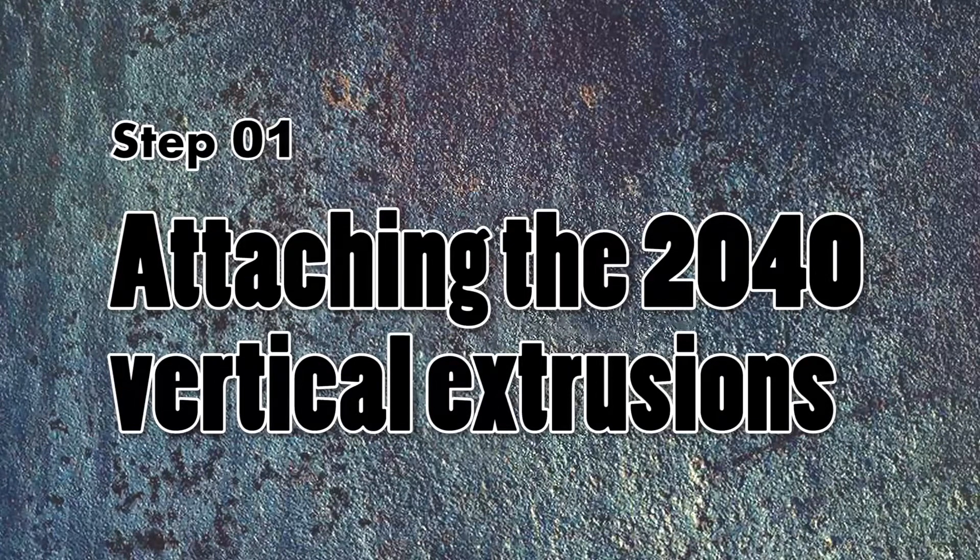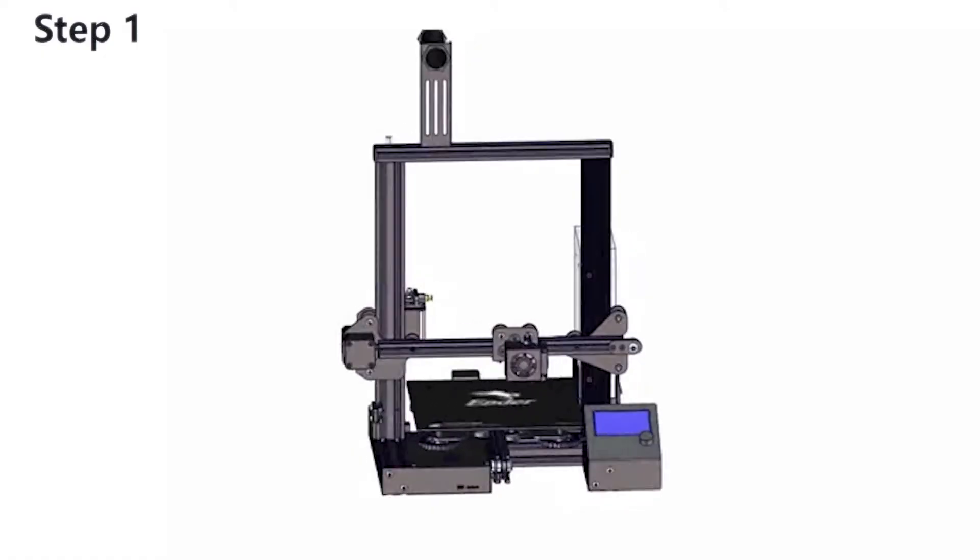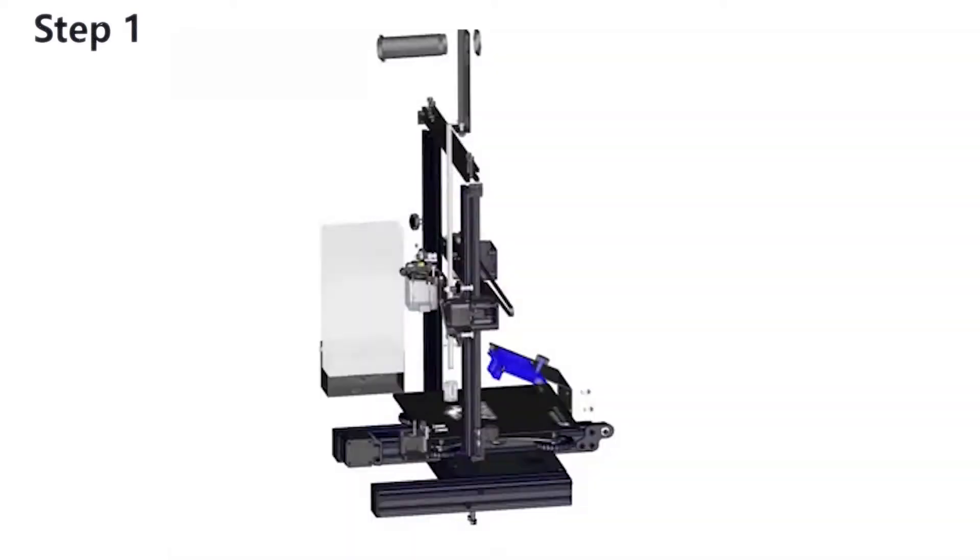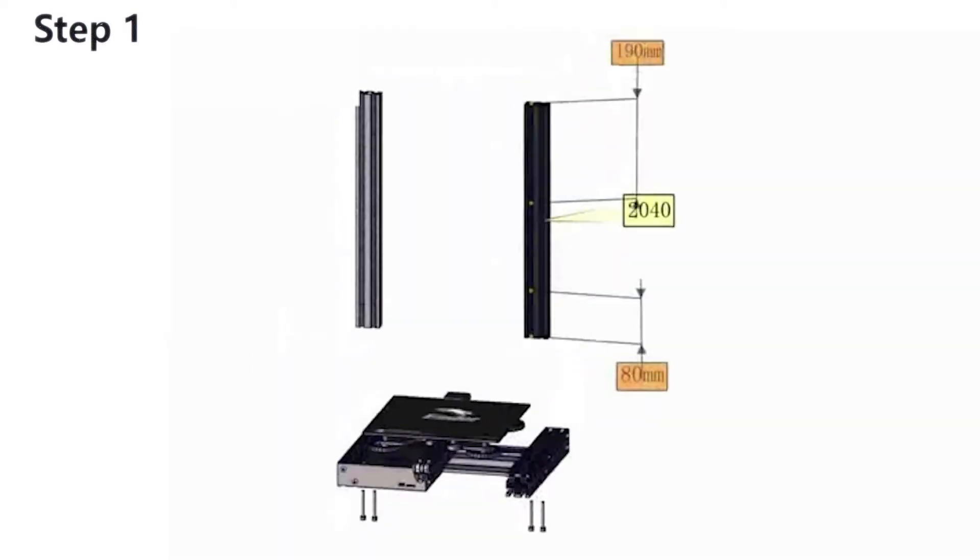We'll begin with the first step of the assembly of your 3D printer by attaching the 2040 vertical aluminum extrusions. We will go over 12 steps in order to assemble our printer, and at the beginning of each of the steps we have this little 3D animation that gives us a preview of what we need to accomplish on each step.